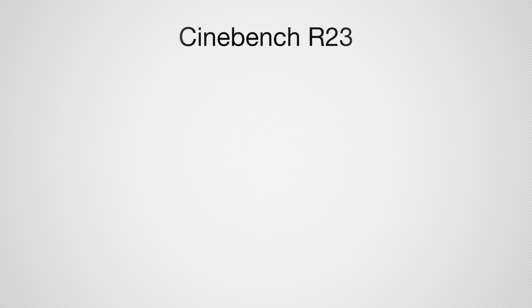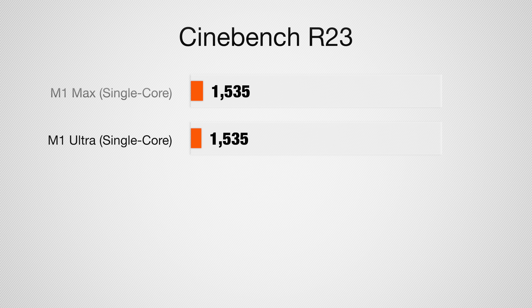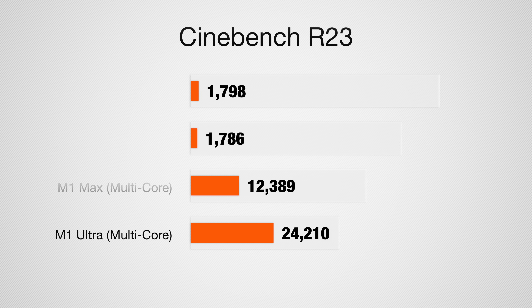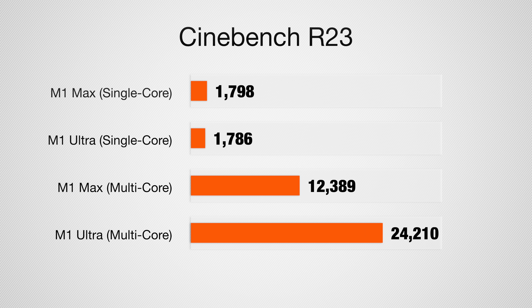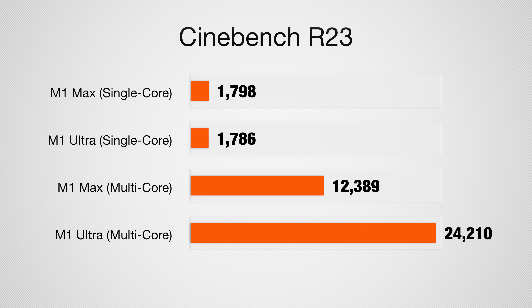For Cinebench, which also tests the CPU, we got 1535 and 1535 on the single core — identical. And for the multi-core, again basically double: 12,389 on the M1 Max and 24,210 on the M1 Ultra.